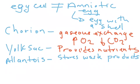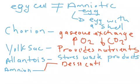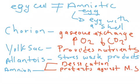The last layer that we have is the amnion. The amnion has a series of functions. Number one, it prevents desiccation—that is to say it stops the embryo from drying out. Number two, it protects against mechanical shock.